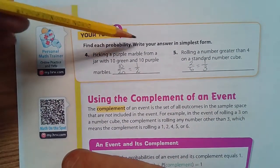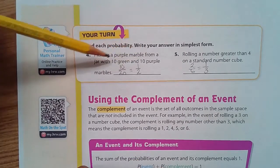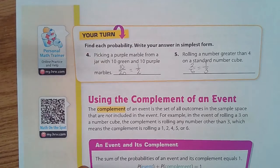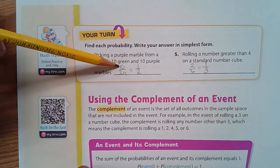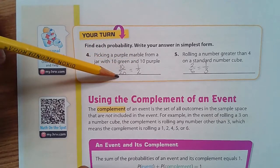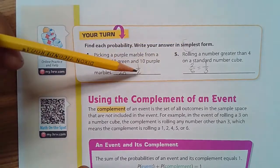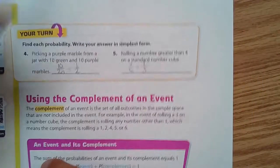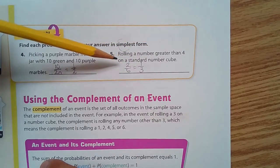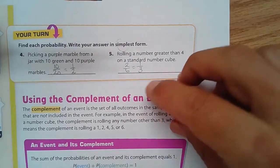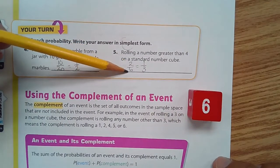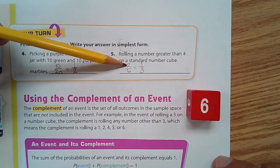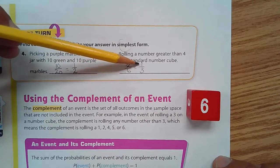Find the probability — write your answer in simplest form. Picking a purple marble from a jar of 10 green and 10 purple: the sample space is 20 total. There are 10 purple out of 20, which simplifies to one half. Rolling a number greater than four on a standard number cube: the options are five and six — two out of the total sample space of six — which simplifies to one third.